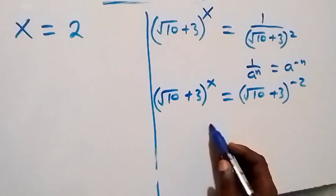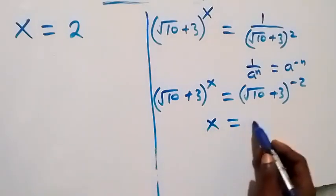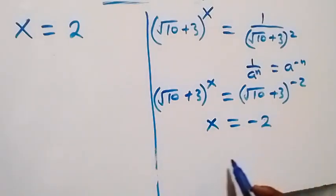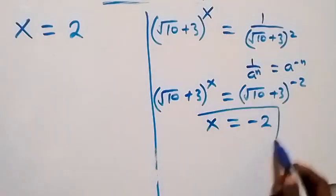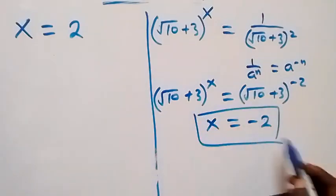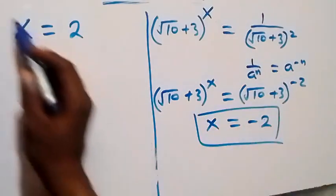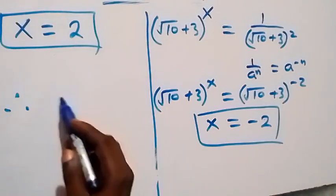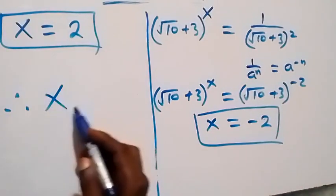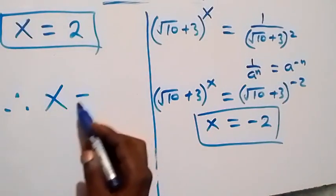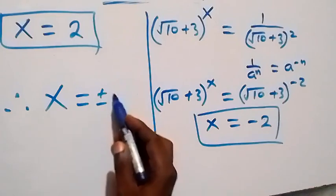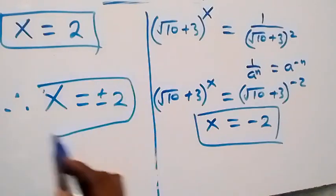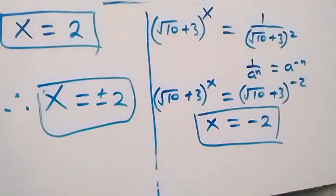When we compare the bases — they are the same — and equate the powers, x equals minus 2. So we have x equals minus 2 and x equals 2; therefore x equals plus or minus 2, and these are the solutions to the given problem.